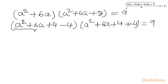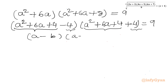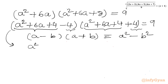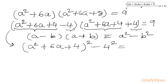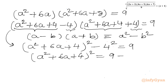Using the difference of squares identity, (a²+6a+4−4)(a²+6a+4+4) = (a²+6a+4)² − 16 = 9. Therefore (a²+6a+4)² = 9 + 16 = 25, which equals 5². Taking the square root of both sides gives a²+6a+4 = ±5.